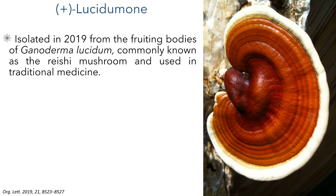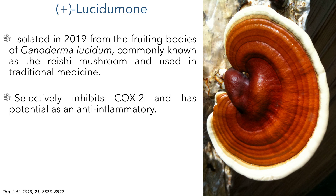This compound was first isolated in 2019 from the fruiting bodies of Ganoderma lucidum, more commonly known as the reishi mushroom. This mushroom has been widely used in traditional Japanese and Chinese medicine. Initial biological studies show that it selectively inhibits the COX-2 enzyme and has potential as an anti-inflammatory.